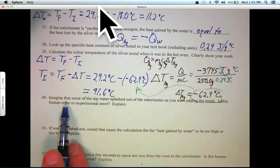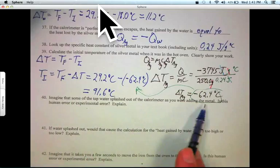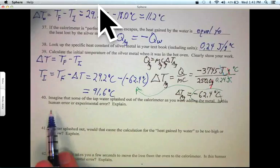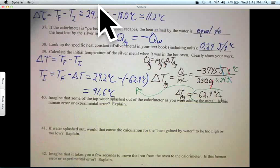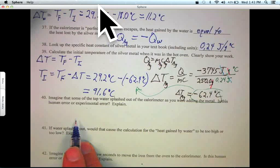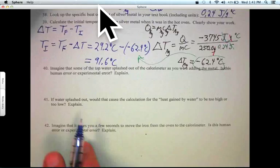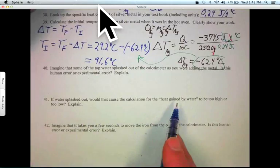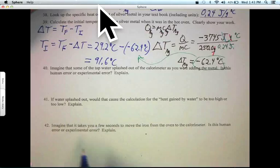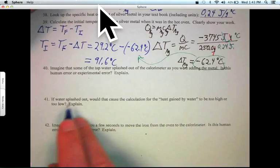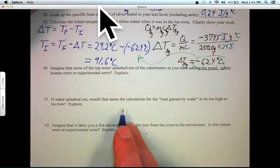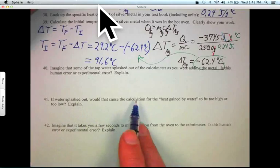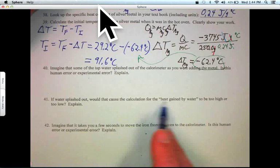A few more questions. Imagine some tap water splashed out. This human, as you're adding it, human error or experimental error? Human error because it's your fault. If the water splashed out, what would that do to the heat gained of the water, higher or lower? Well, let's see. Less water means the temperature would rise more, which means that it would look like it gained more heat. So that would increase the Q.